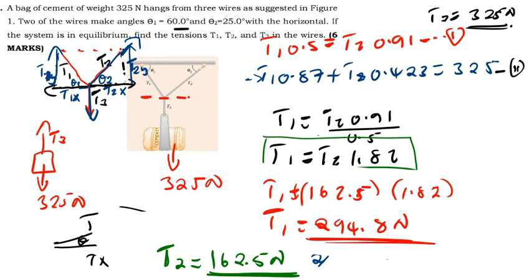This question is very interesting because you need to understand the concept of static equilibrium. Just using Newton's laws without this concept makes it harder. Remember two things: static equilibrium states the summation of forces in the x-direction is zero, and the summation of forces in the y-direction is zero. Work with x-forces first, then y-forces. Sometimes you can solve without separating into components, but here I had to separate them to find the unknowns.